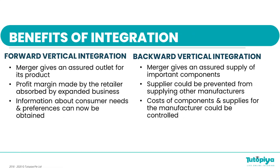Let's look at the benefits of both types of vertical integration — forward vertical and backward vertical. With forward vertical integration, the merger gives us an assured outlet for products, which helps with our supply chain to ensure we are able to sell consistently, ensuring some level of profits. The profit margin made by the retailer would be absorbed by the expanded business, and information about consumer needs and preferences can be obtained, giving us a market advantage over other firms.